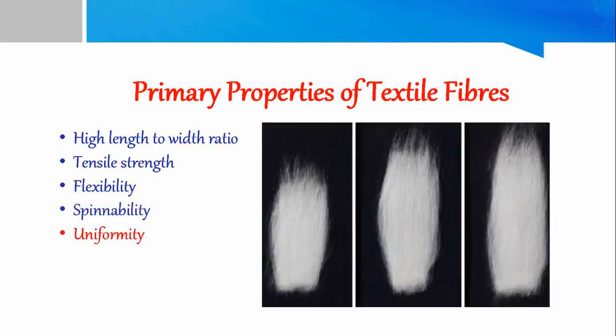Next property is uniformity. It is the evenness of individual fibers in length and diameter. This ensures production of even yarns which can then form fabric of uniform appearance. Uniformity also affects the spinning quality and flexibility.